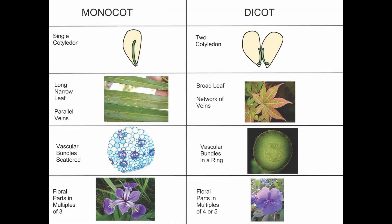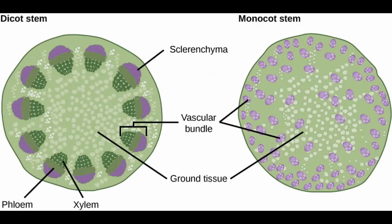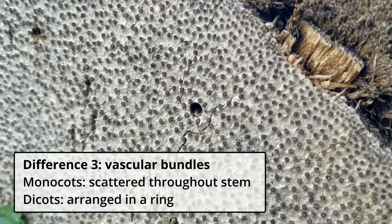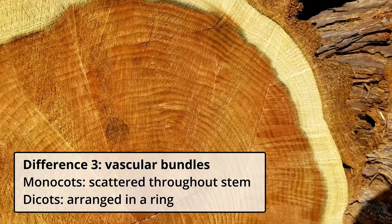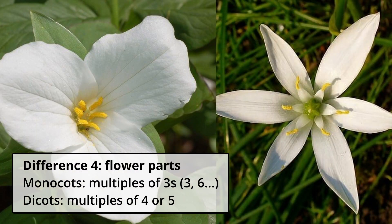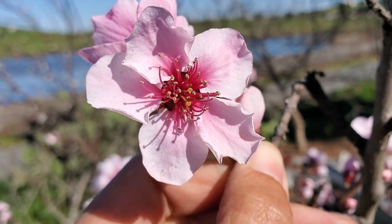Next, this may be the most important distinction between the two groups. The vascular bundles are arranged differently. This is the xylem and the phloem — it's what moves water, sugars, and stuff like that throughout the plant. In monocots they're arranged in bundles scattered throughout the stems, and in dicots they're arranged in a ring. Lastly, the flower parts of monocots are found in sets of threes, whereas on dicots they're in fours and fives.